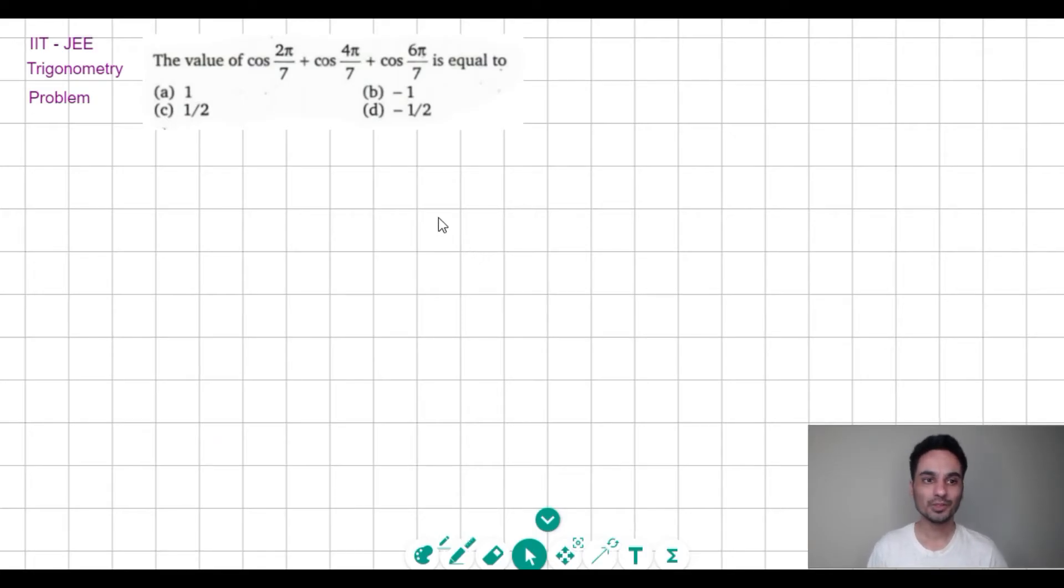Hello, today we are discussing this IIT-JEE trigonometry problem. The question is: the value of cos 2π/7 + cos 4π/7 + cos 6π/7 is equal to... and we are given four options. It is a single answer correct question.